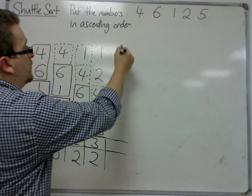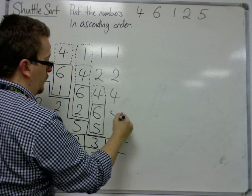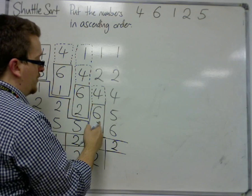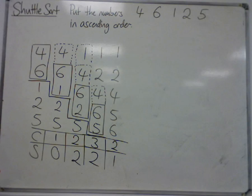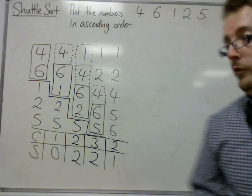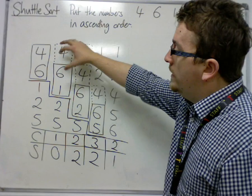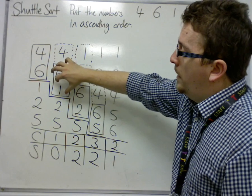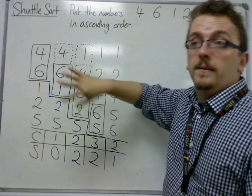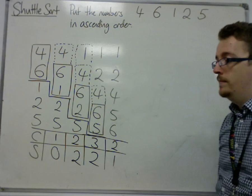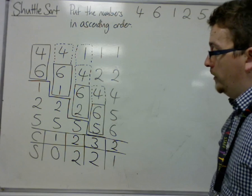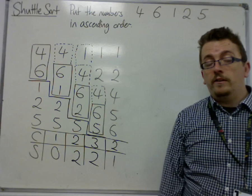So we now have it as one, two, four, five, six. Here we made two comparisons and one swap. So this is how shuttle sort works. You can imagine that when the shuttle meets a new number, it shuttles it into the correct position. That's an example of shuttle sort. I will go through another example in the next video.